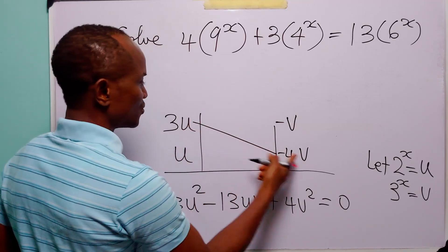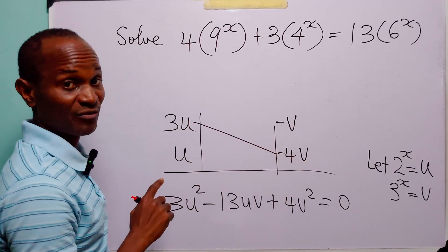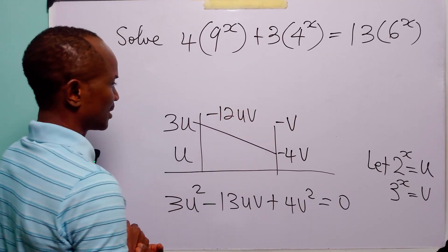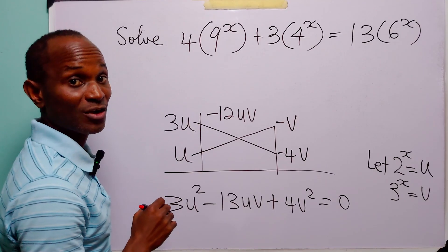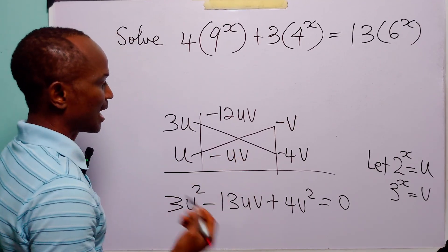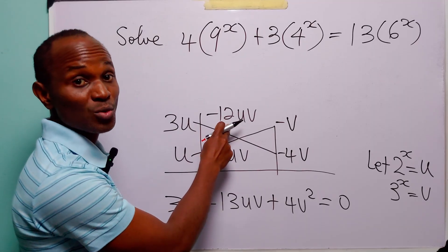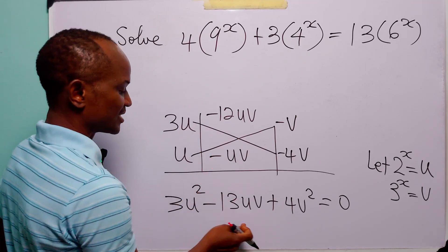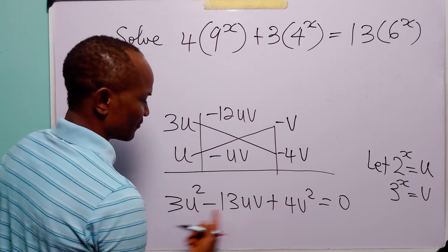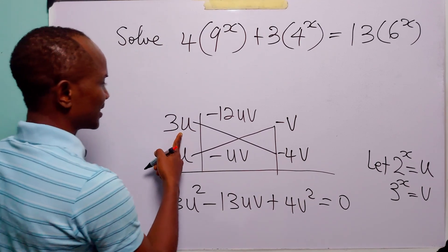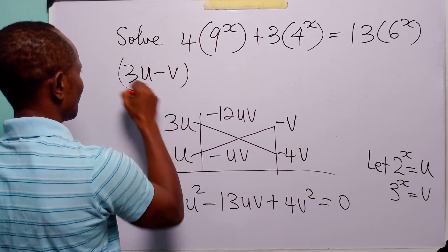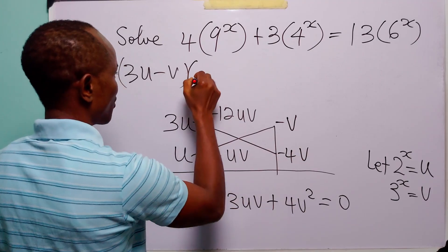Now 3u times minus 4v gives us minus 12uv, while u times minus v gives us minus uv. And minus 12uv plus minus uv gives us minus 13uv. So the factors of this quadratic equation are (3u minus v) and (u minus 4v).